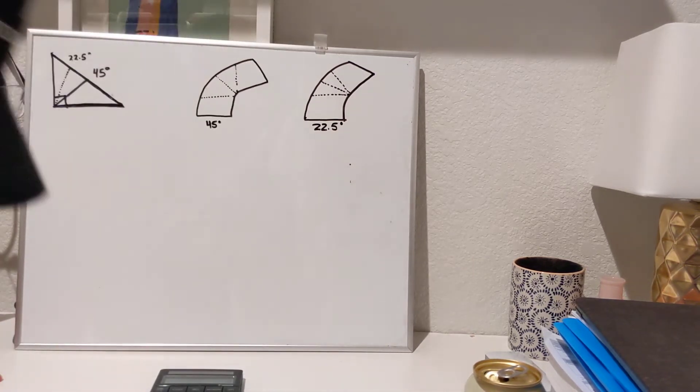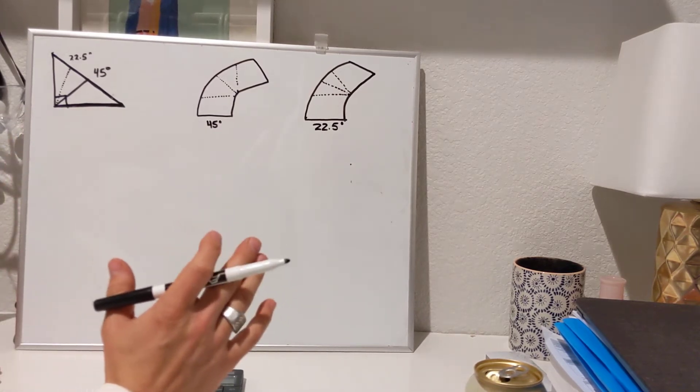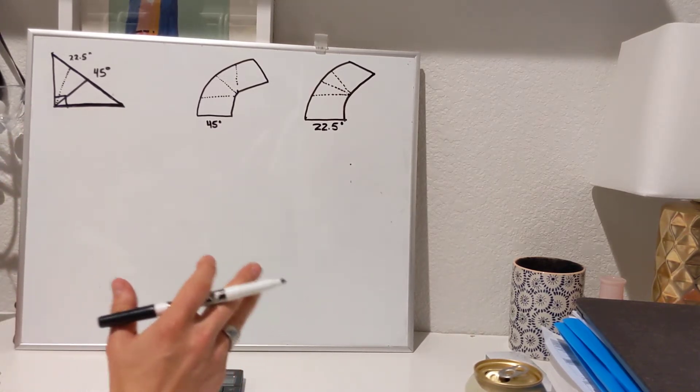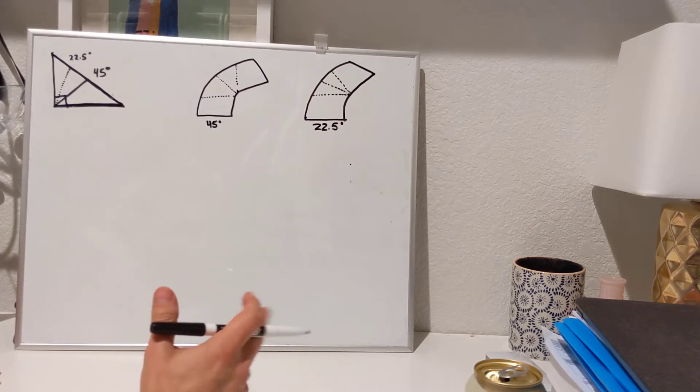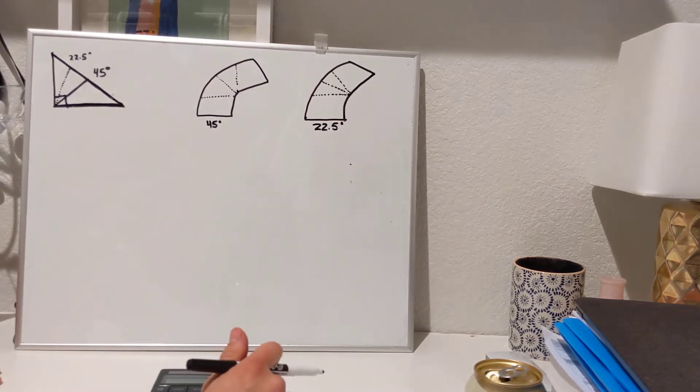Alright, let's get into this and how it works. We're working on a 22.5-degree offset. In the field we'll call it a 22-degree offset, even though it is 22.5.